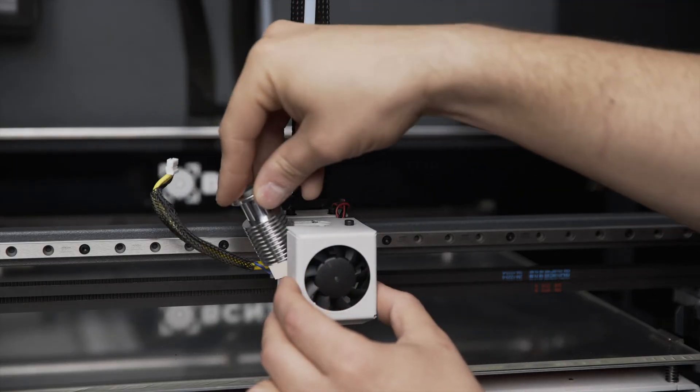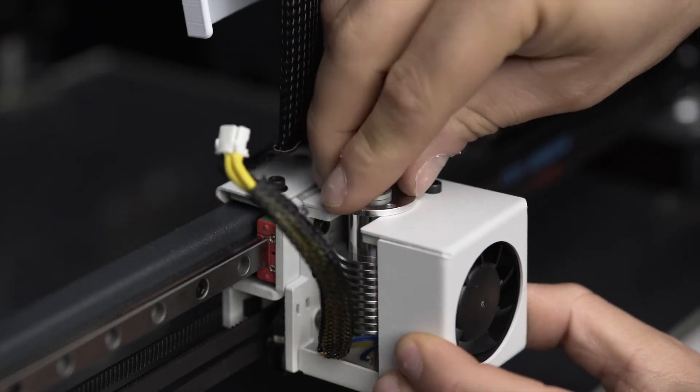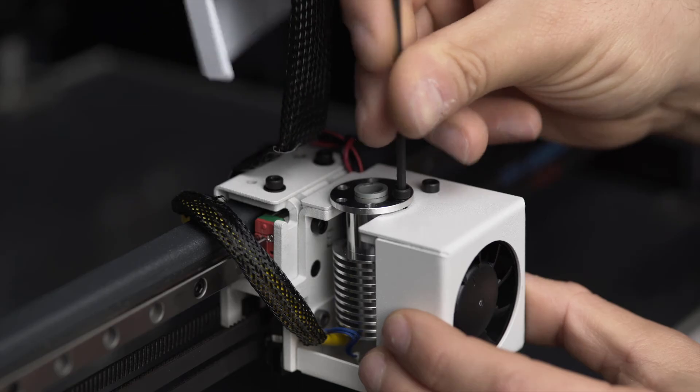Insert it by slightly inclining and then placing it in position. Re-secure the hotend to the extruder board with the two screws.